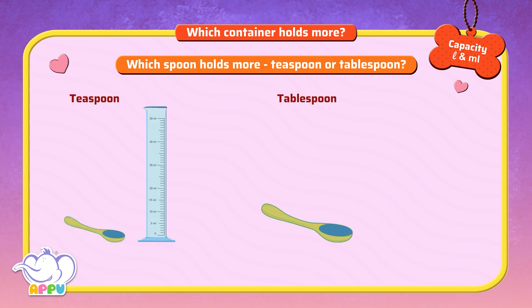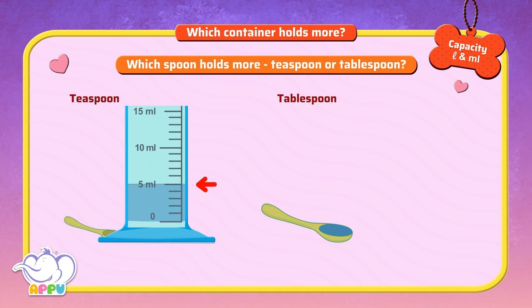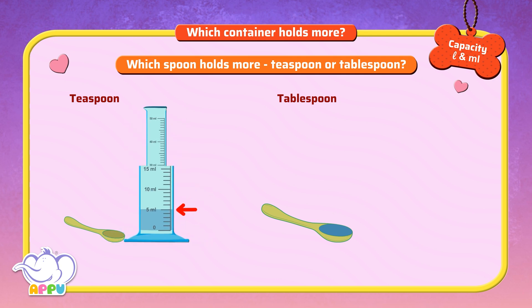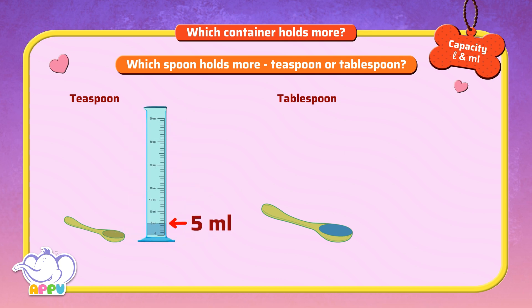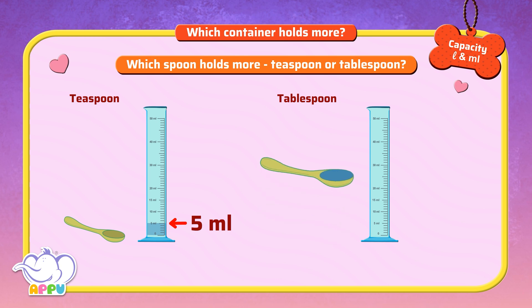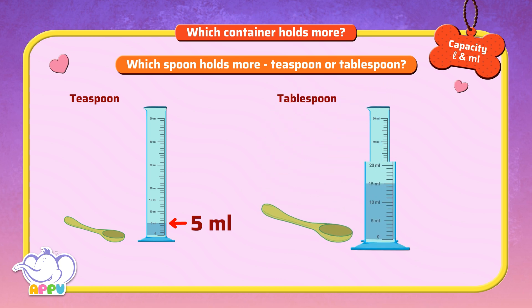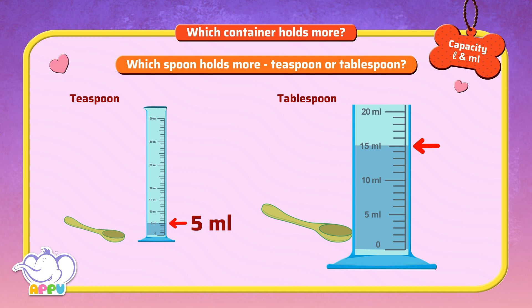Let's find the capacity of the teaspoon. The capacity of the teaspoon is 5 ml. Let's find the capacity of the tablespoon. The capacity of the tablespoon is 15 ml.